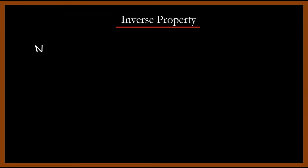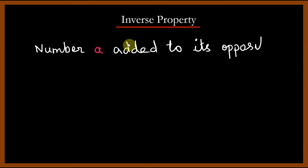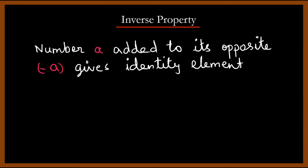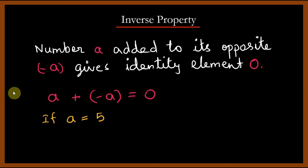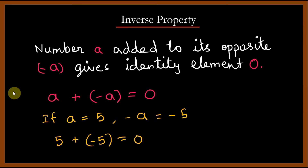This is a property not mentioned at the beginning. The inverse property of addition states that there is a number A such that when you add it to its opposite, which is negative A, you get the identity element, which is 0. It means that A plus negative A is equal to 0. For example, if A is equal to 5, then its opposite is negative 5. So, 5 plus negative 5 is equal to 0. Hence, the inverse property is true for addition.